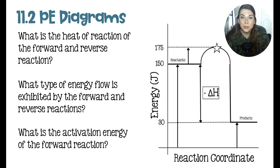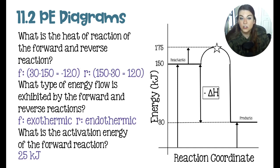Next up, we're looking at this potential energy diagram. And the question is, what is the heat of reaction for the forward and the reverse reaction? What type of energy flow is exhibited by the forward and the reverse reaction? And then last, what is the activation energy of the forward reaction? So in order to figure that out, you do the products minus the reactants, how much energy they have stored in their bonds.